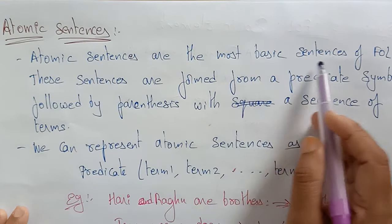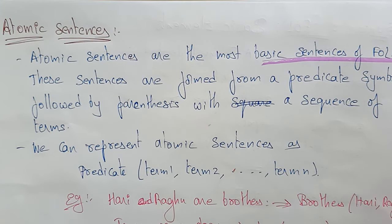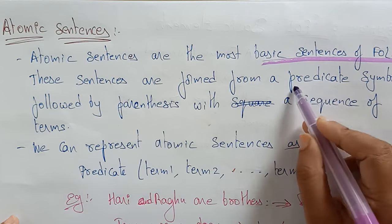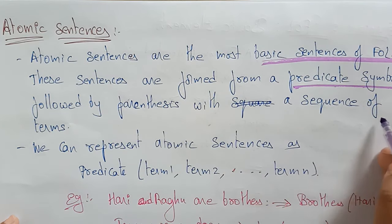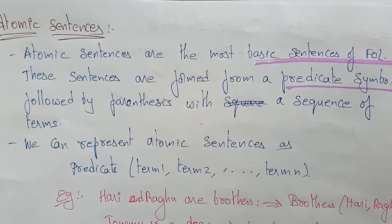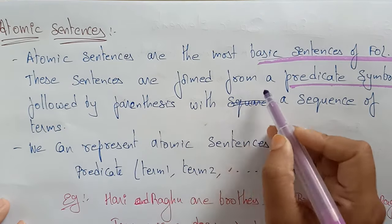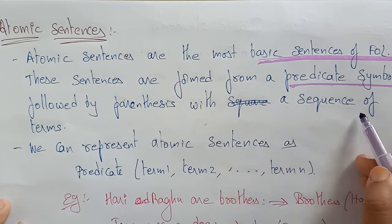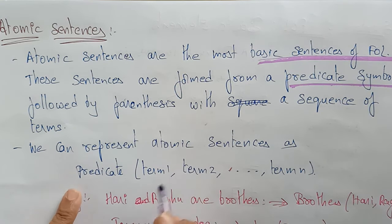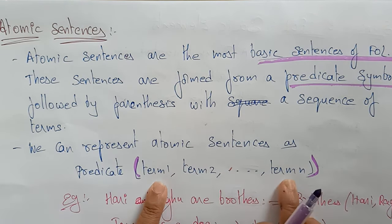Atomic sentences are the most basic sentences of first-order logic. These sentences are formed from a predicate symbol followed by parentheses with a sequence of terms. The predicate is doing some operation — like 'father of' or 'greater than' or 'less than' — it represents some type of relationship. So the atomic sentence is represented as: predicate followed by parentheses containing a sequence of terms: term1, term2, and so on.